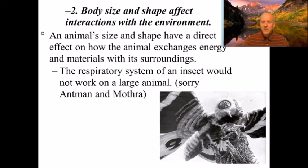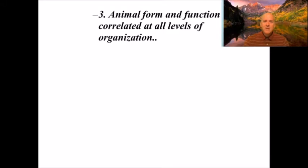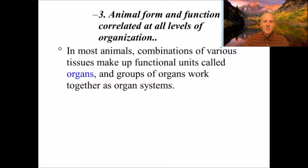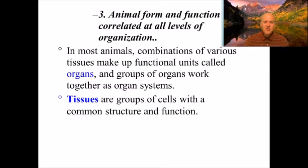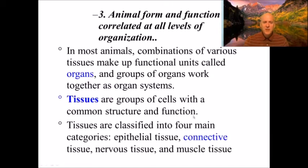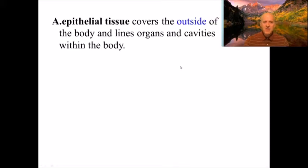In most animals you have a combination of various tissues that make up functional units called organs, and groups of organs work together as organ systems. You start with cells, cells come together to make tissues, tissues come together to make organs, and organs work together as systems. Tissues are groups of cells with a common structure and function, and there are four main categories: epithelial, connective, nervous, and muscle tissue.